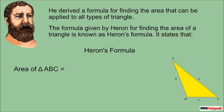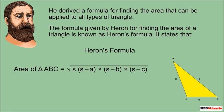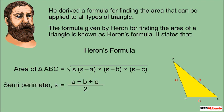Heron's formula states that the area of a triangle equals the square root of S × (S − a) × (S − b) × (S − c), where a, b, and c are the sides of the triangle, and S is the semi-perimeter — that is, half of the perimeter of the triangle. This formula is especially helpful when it is not possible to find the height of the triangle easily.